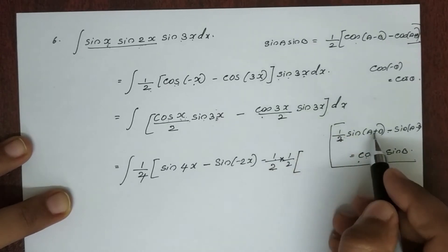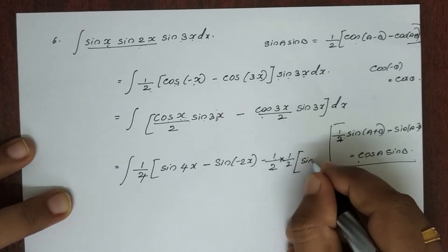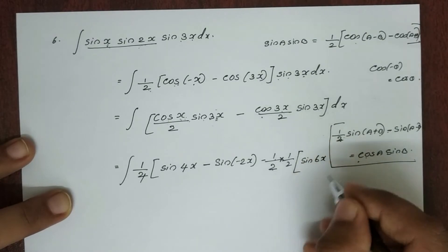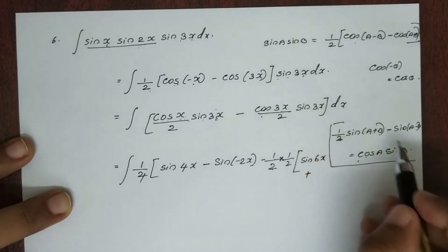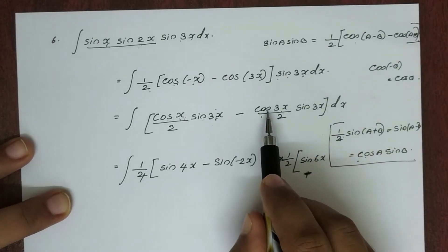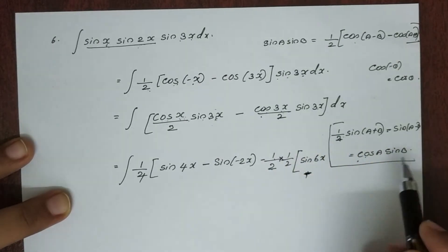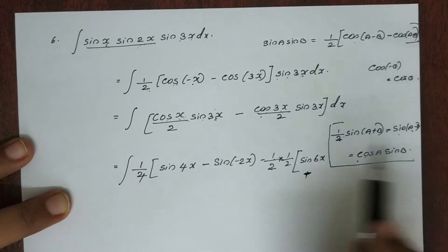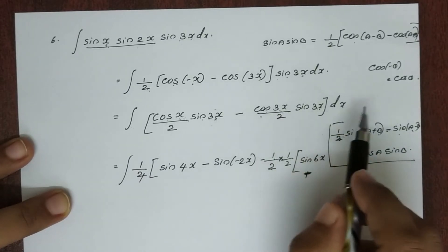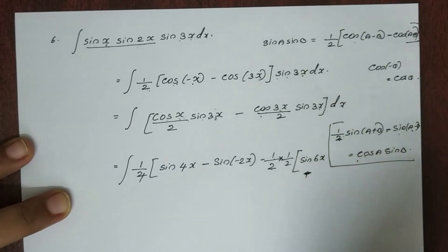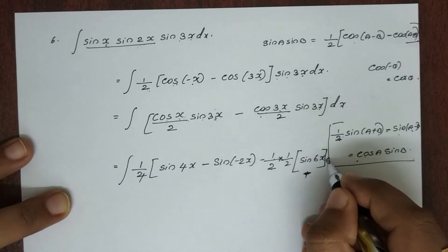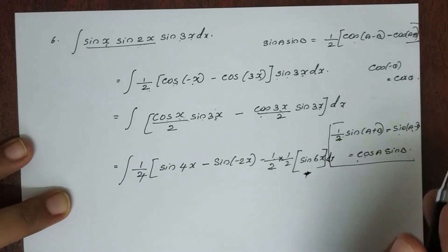For cos 3x · sin 3x, using the same formula with a = b = 3x: sin(3x+3x) − sin(3x−3x) = sin 6x − sin 0. Since sin 0 = 0, this term reduces to ½ sin 6x. We now rearrange and integrate all terms.